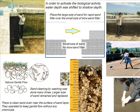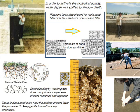They washed the sand for cleaning. This was done many times. Then the filter sand became larger in size. There is clean sand even near the surface of the sand layer. They operated to keep gentle flow without any chemicals. Therefore, this thin scraping of dirty sand was enough.